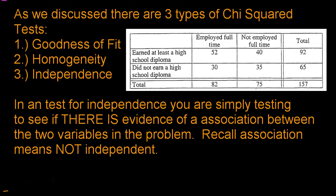An independence test would look something like this. First, there's got to be a two-way table because there have to be two variables. On the left-hand side we have: do you have a high school diploma? Yes or no? That is categorical — the answer is a word. And then: do you have a full-time job? Yes or no? Again, these are categorical variables. There are two of them.